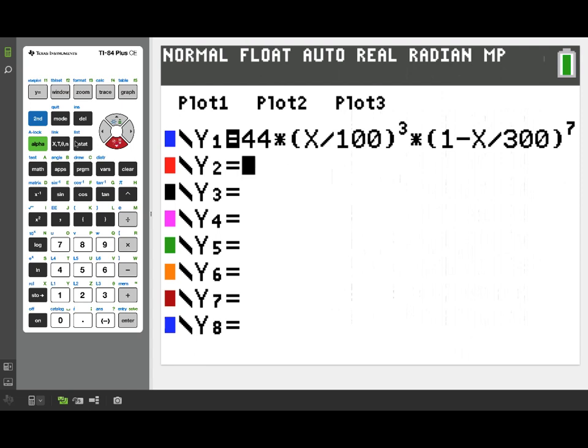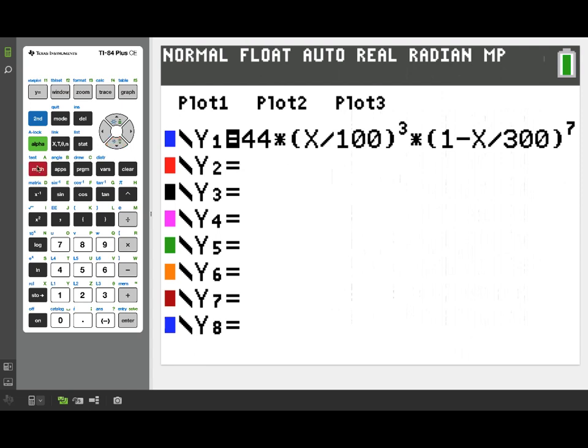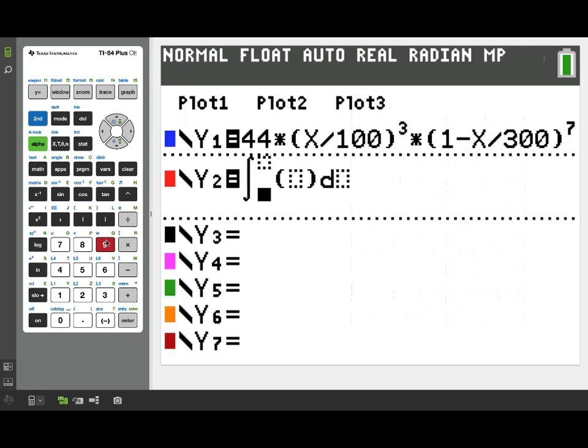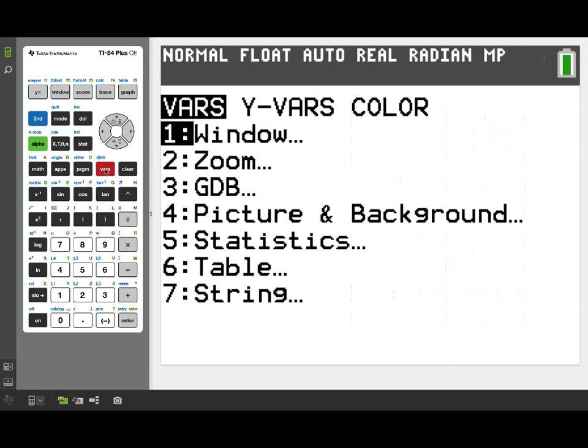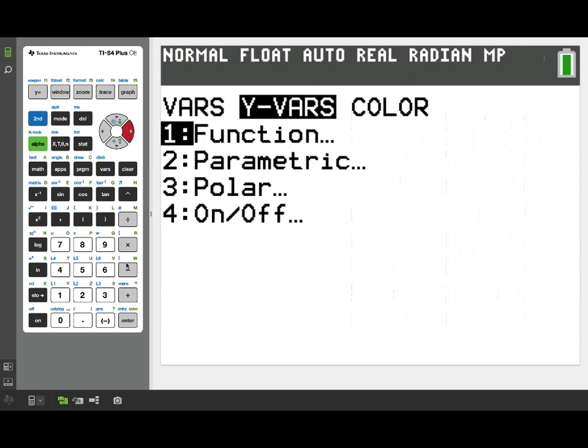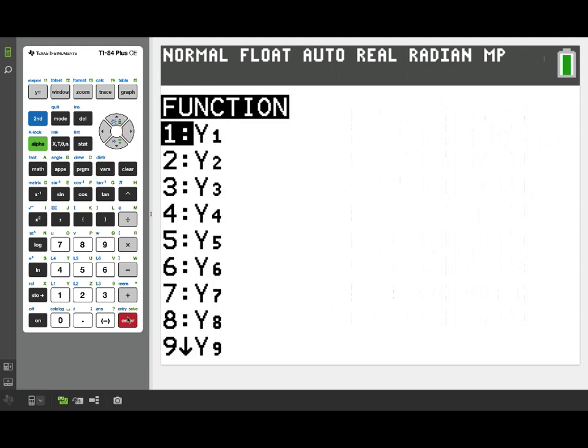So what I want to do now is think of a new function, which is going to give us the total number of folks who have accumulated in line from time t equals 0 up to any time x. So for that, I'm going to form a new function Y2 where it's a definite integral that goes from 0 to x. And again, we'll be integrating our rate function, which is Y1.